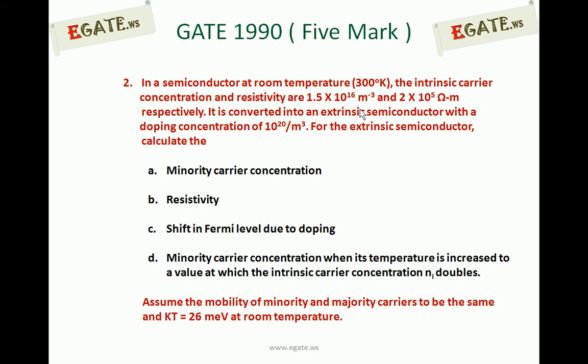In a semiconductor at room temperature, the intrinsic carrier concentration and resistivity are 1.5×10¹⁶ per meter cube and 2×10⁵ ohm-meters respectively. It is converted into an extrinsic semiconductor with a doping concentration of 10²⁰ per meter cube. For the extrinsic semiconductor, calculate: A. Minority carrier concentration, B. Resistivity, C. Shift in Fermi level due to doping, D. Minority carrier concentration when its temperature is increased to a value at which the intrinsic carrier concentration doubles.